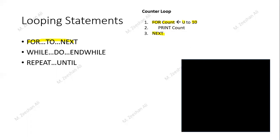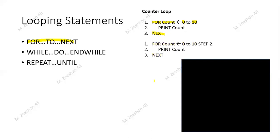Initially the count value is 0, then it prints count, so 0 appears. The processor reaches the 'next' statement, which increments count by one, making it 1. In the next iteration, count value 1 is printed. The same thing happens again and again — 11 times total from 0 to 10.